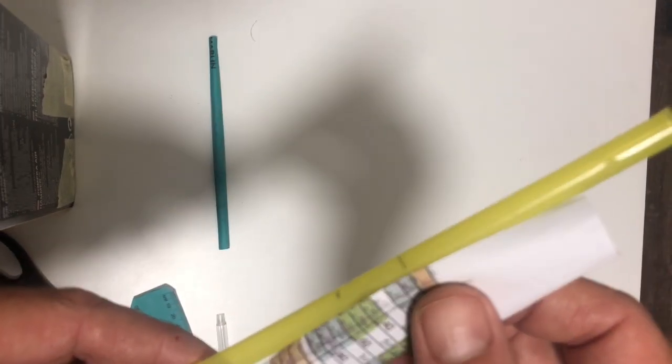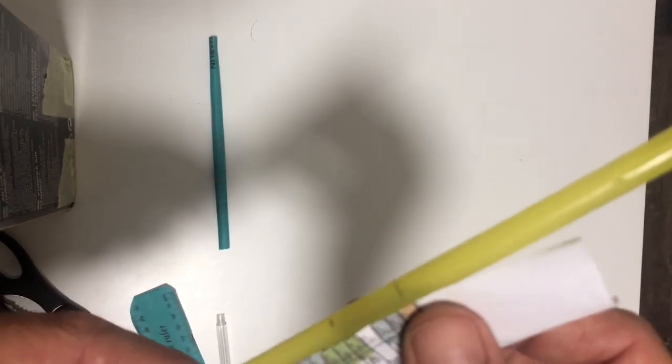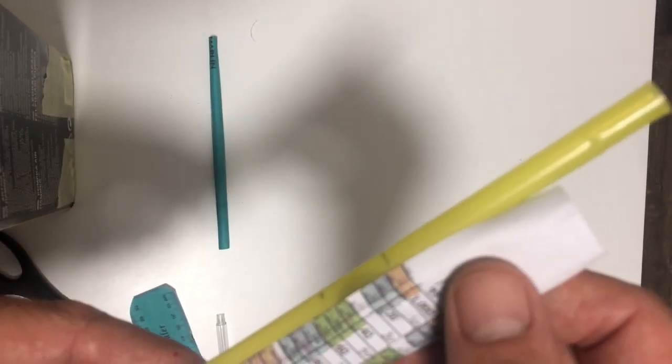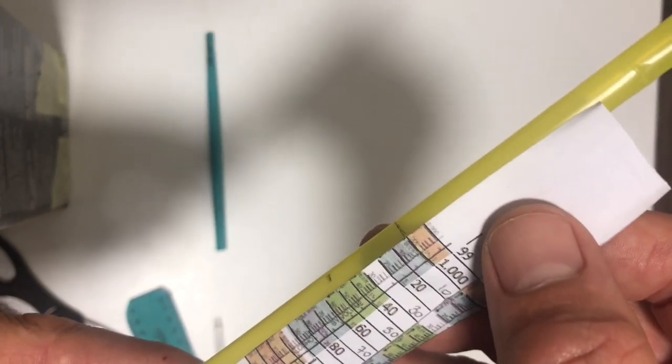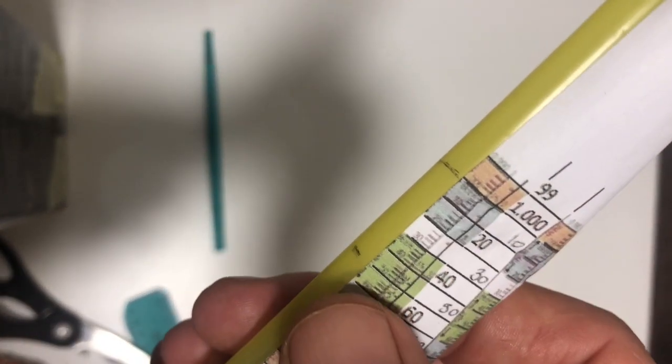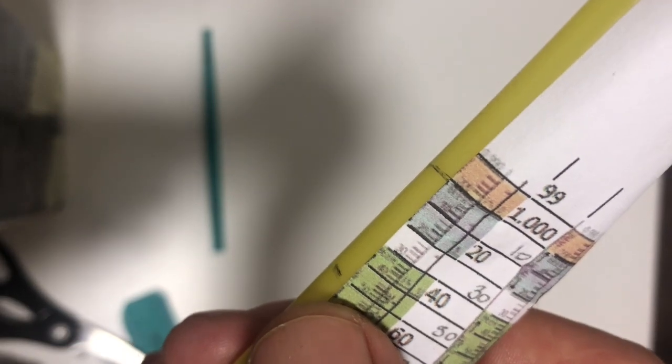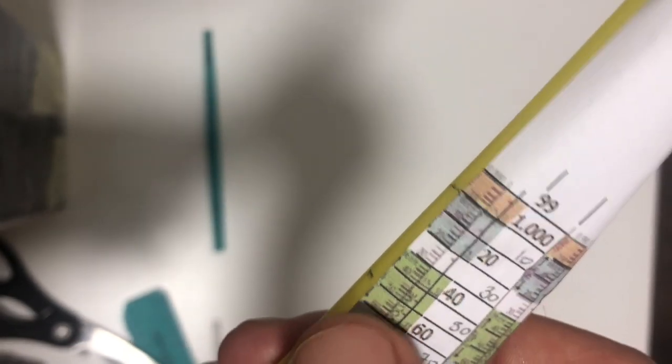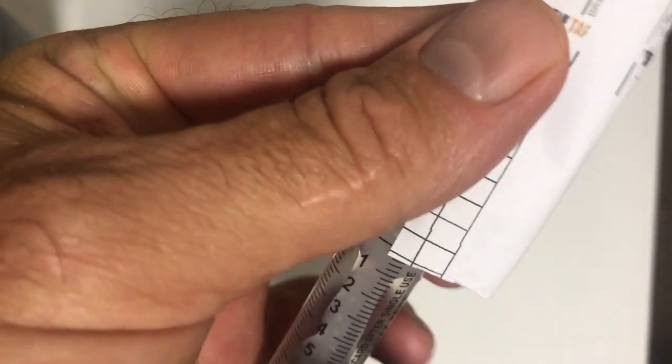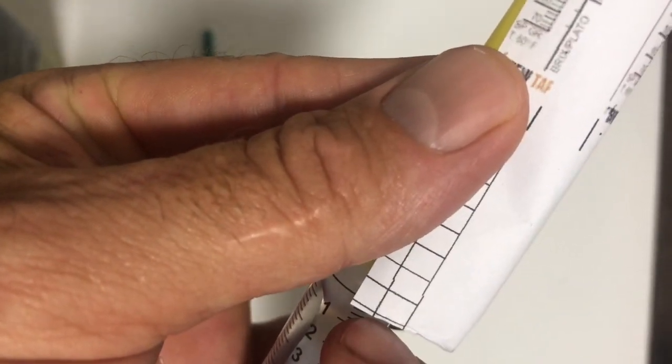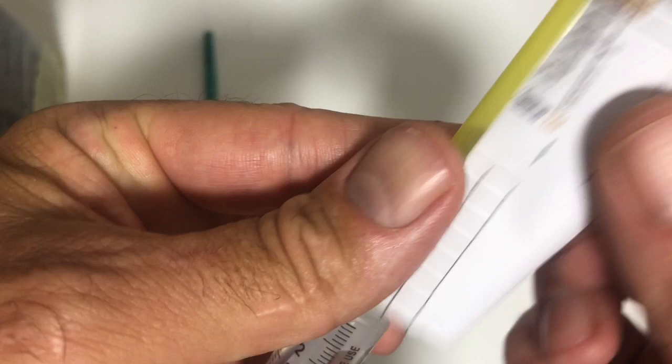Once you've done that, ensure that the total length of this paper that you're going to insert into the straw, when it's inserted into the straw and bottoms out, will actually line up with your corresponding information on the straw. Once you're happy with that, roll it up and insert it into the straw, and you are almost ready to rock and roll.